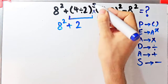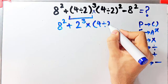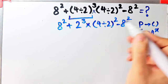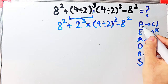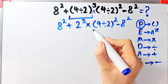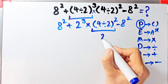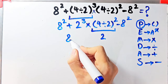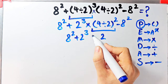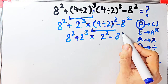Now we have: eight to the power of two, plus two to the power of three, then times open parenthesis four divided by two close parenthesis to the power of two, minus eight to the power of two. Again we simplify the parentheses. Inside these parentheses we have four divided by two. Four divided by two equals two. Now the question is: eight to the power of two, plus two to the power of three, then times two to the power of two, minus eight to the power of two.